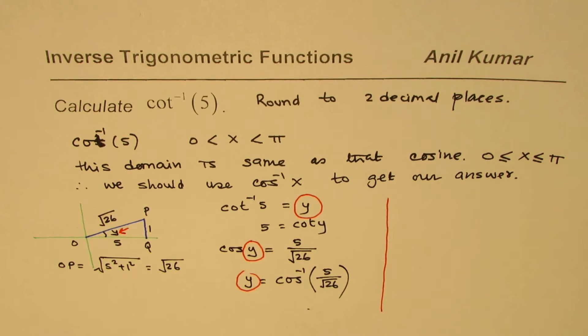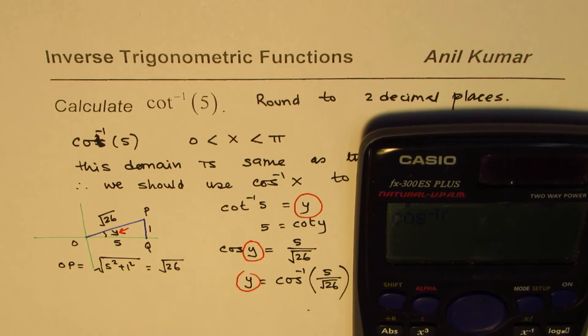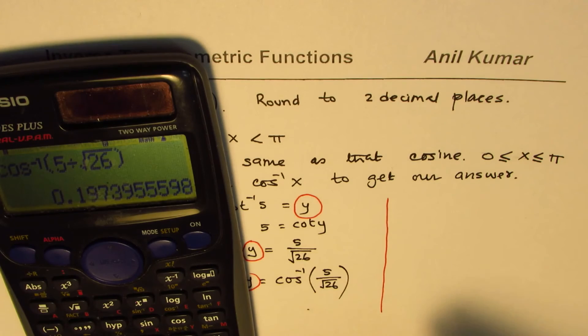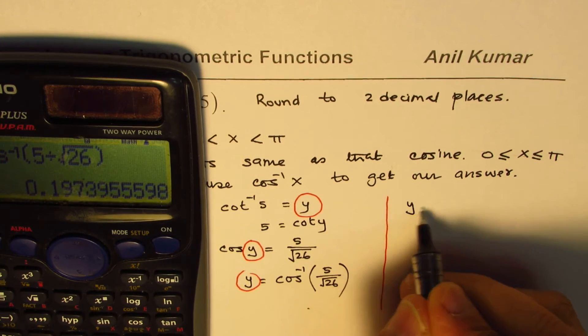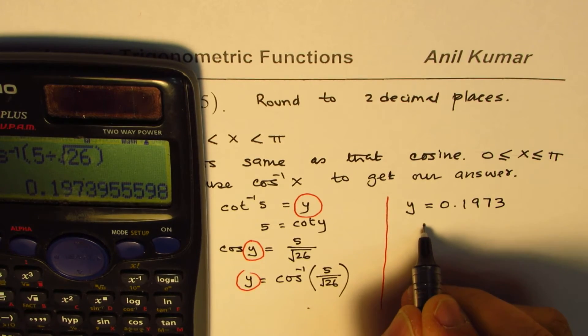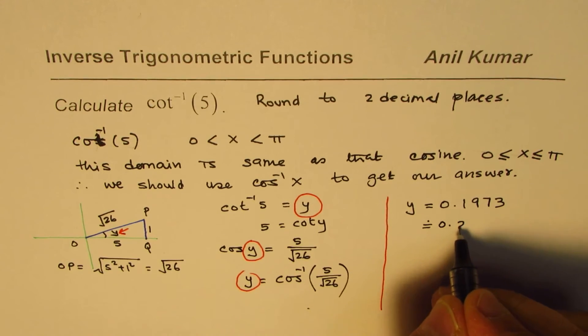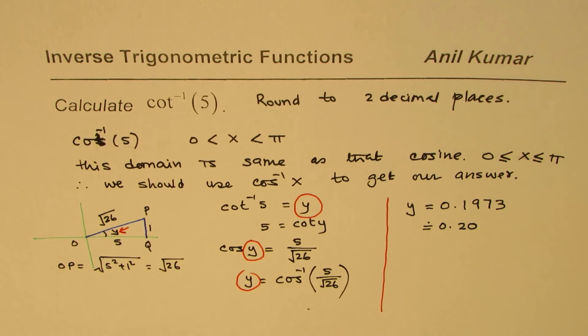Let's find the value. We calculate cos⁻¹(5/√26). The calculator should be in radians. We get the answer y equals 0.1973. We need to approximate it to two decimal places, which gives us 0.20.